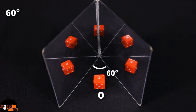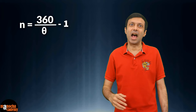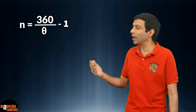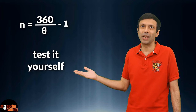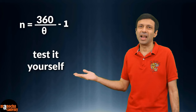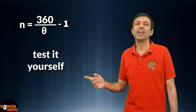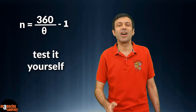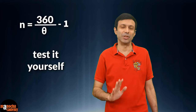Let's make the angle even smaller — 60 degrees. How many images do you see? That's right, 5! Why don't you test the formula yourself? You'll see you get 5 images. So the formula matches our observation.